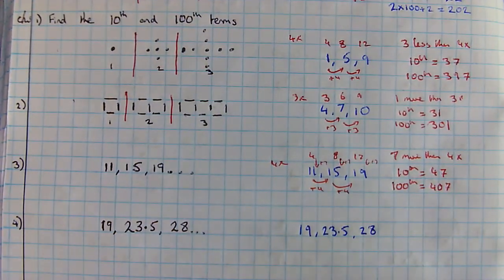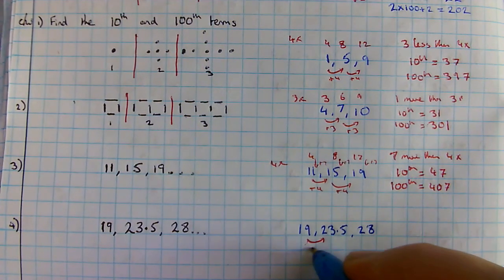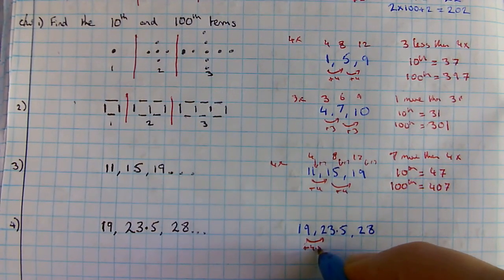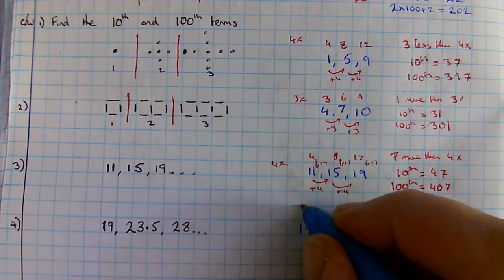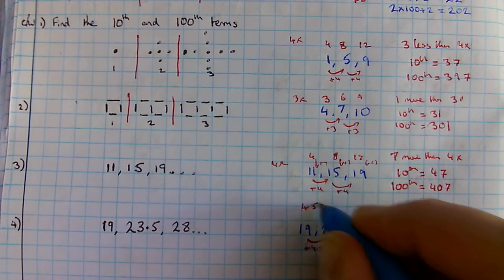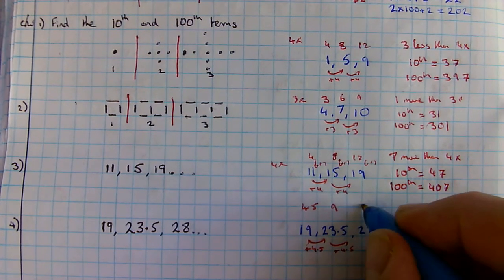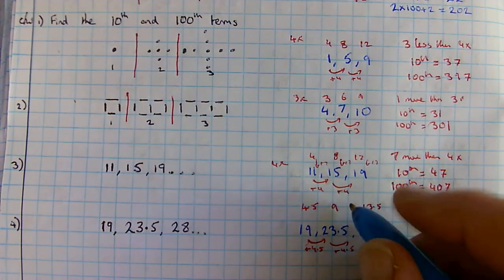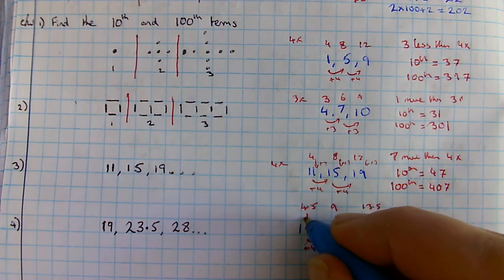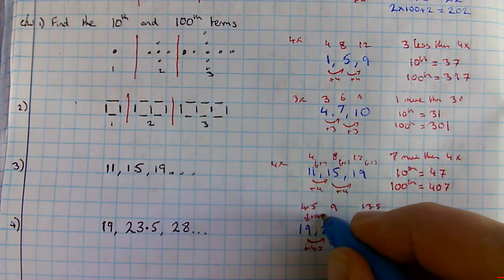The last one's a bit more difficult because it goes up by decimals. Here I've got plus 4.5 and plus 4.5, so it must be the 4.5 times table. It's 4.5, 9, 13.5. If I think about what the gap is here, in each case I'm adding 14.5.